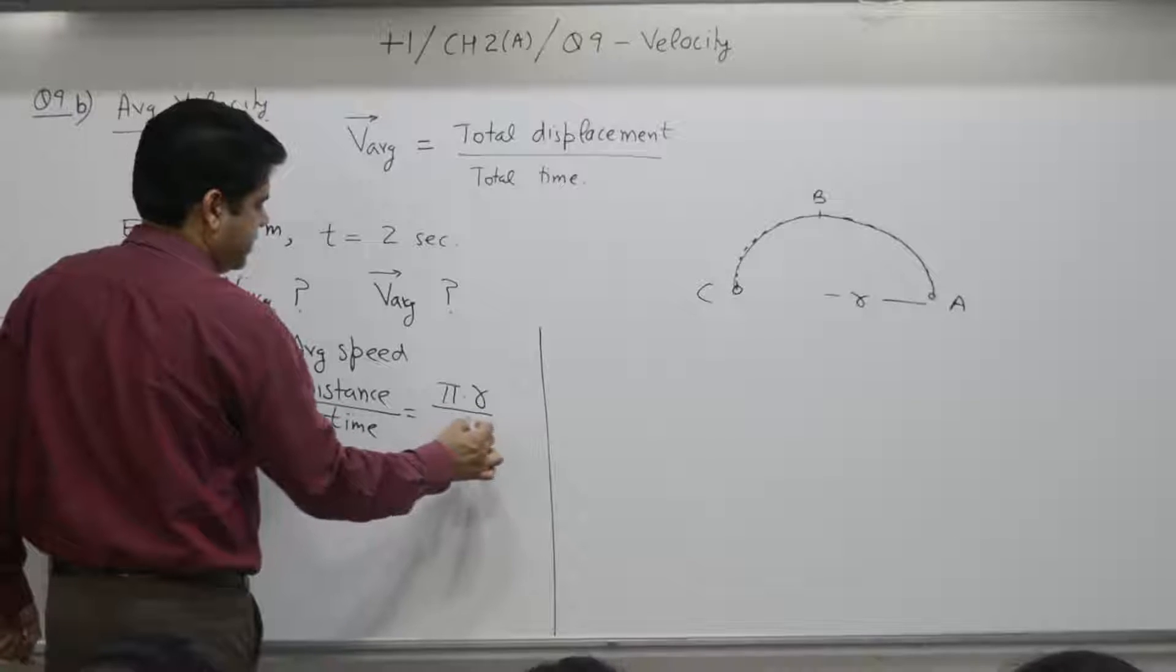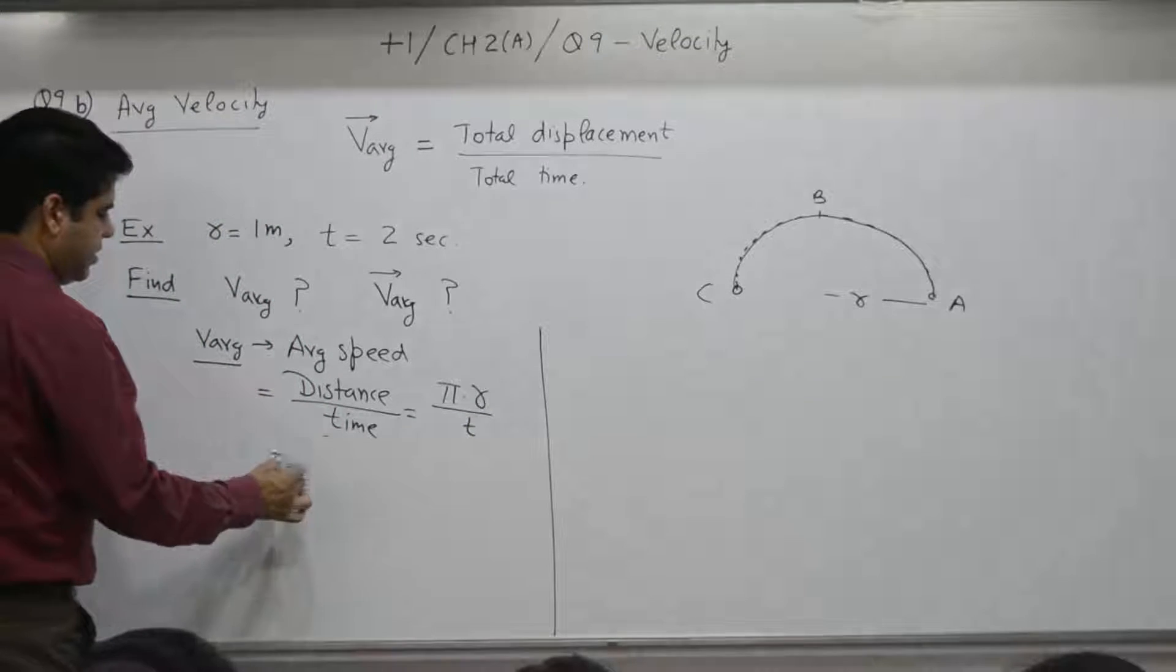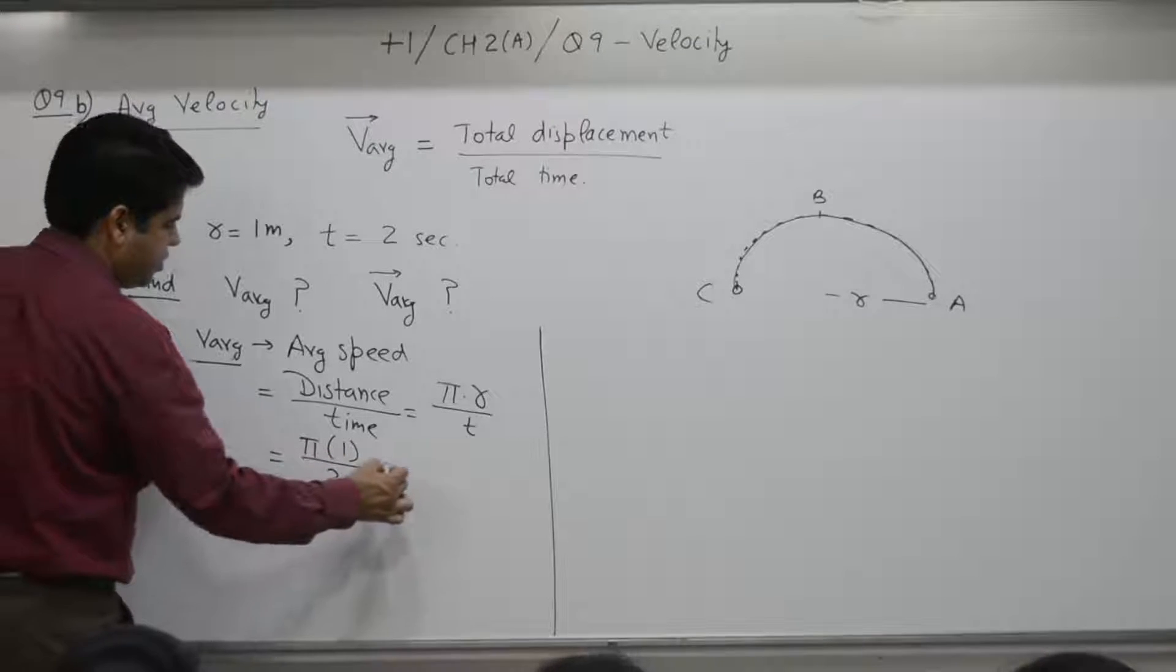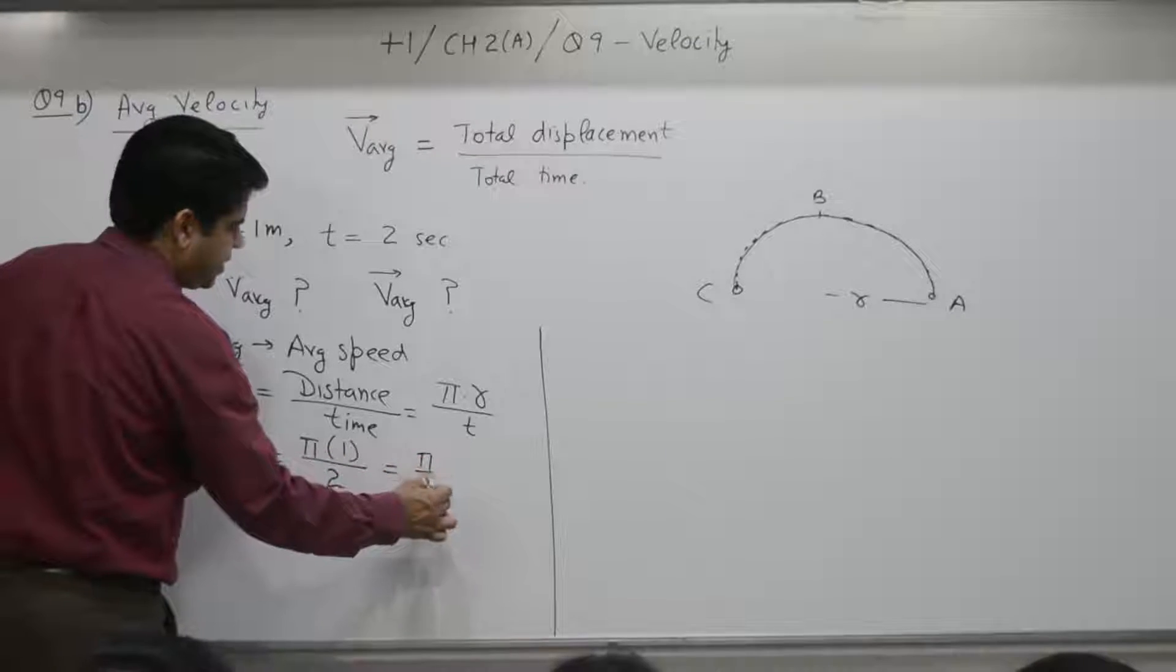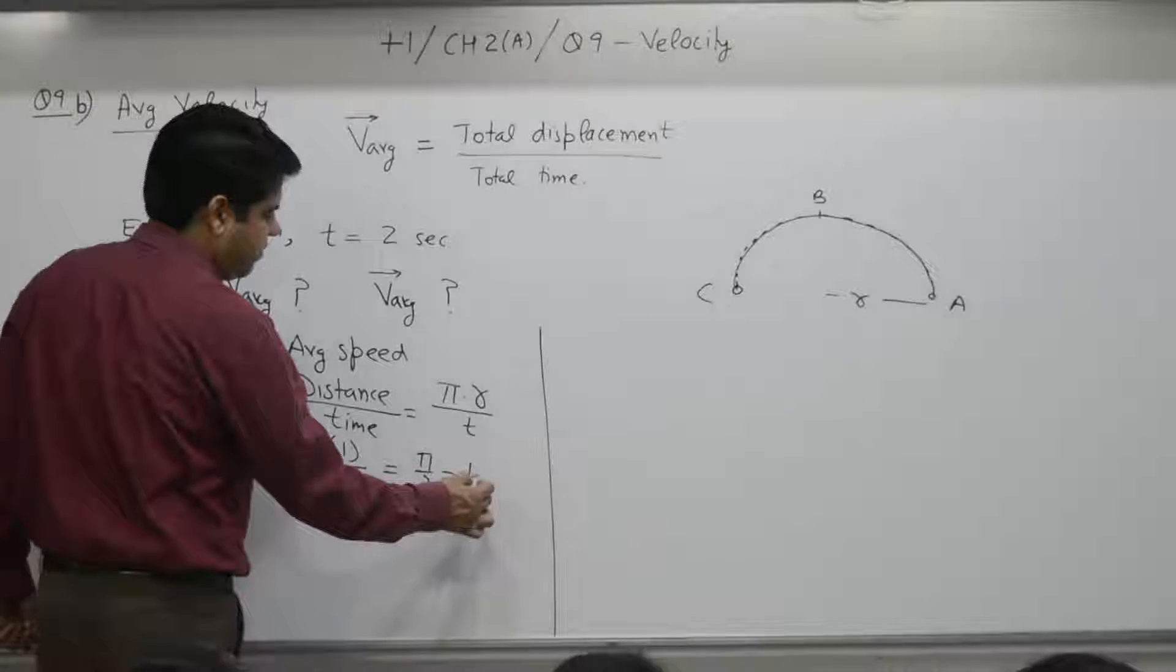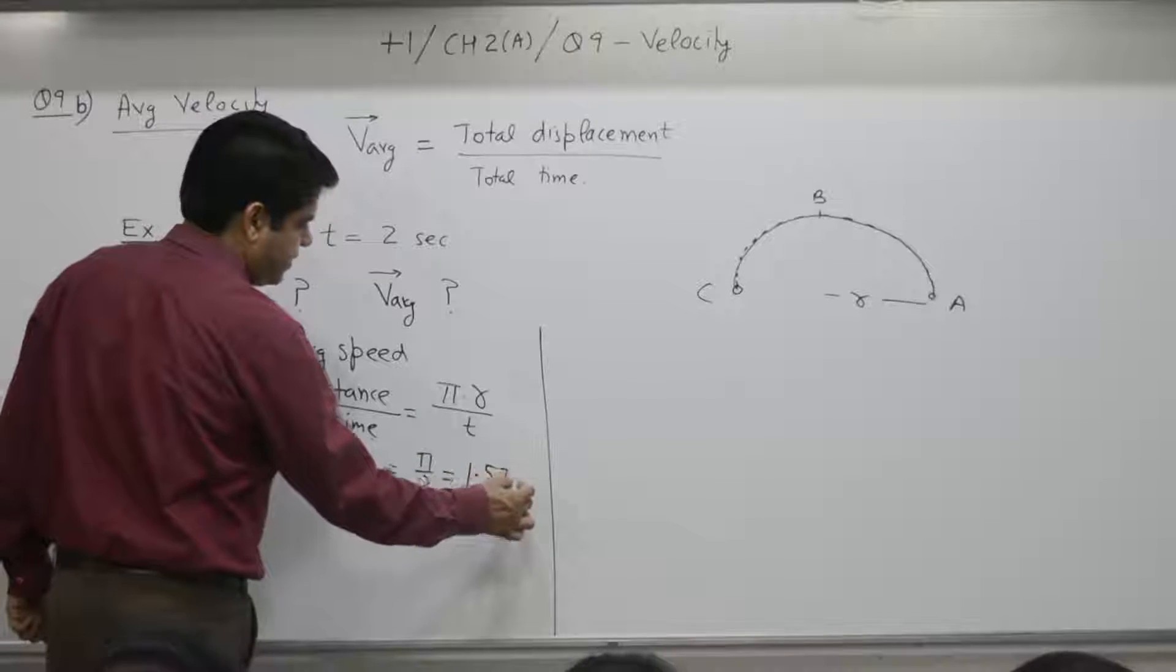Time taken is T, it is equal to pi. R is how much? 1. Time is 2. So, the answer is pi by 2, 3.14 divided by 2. So, 1.5 meter per second.